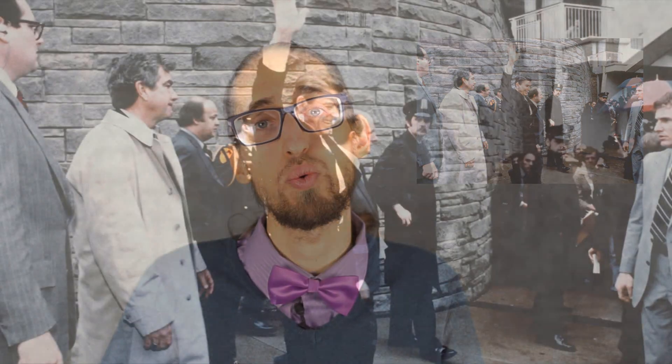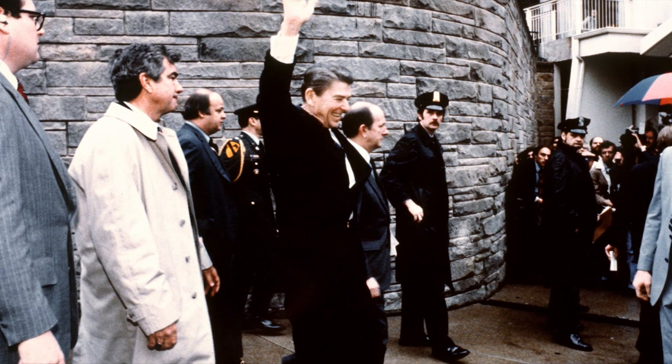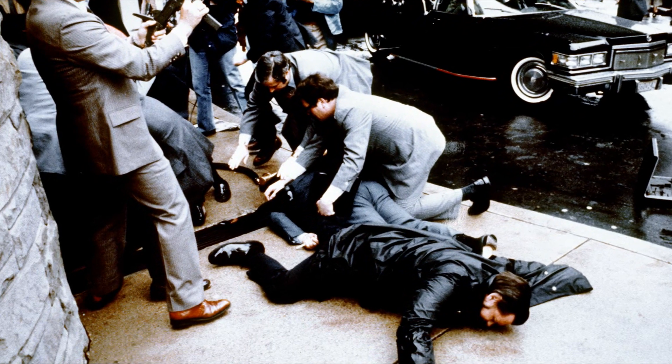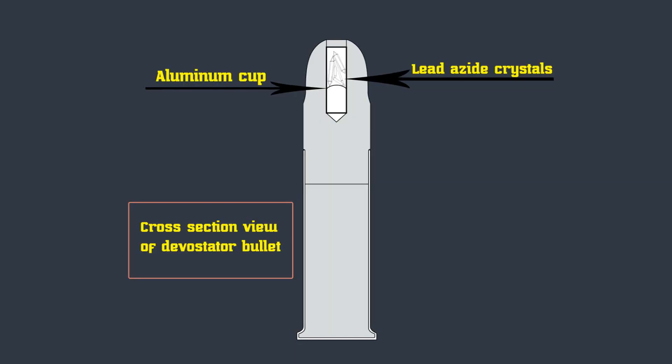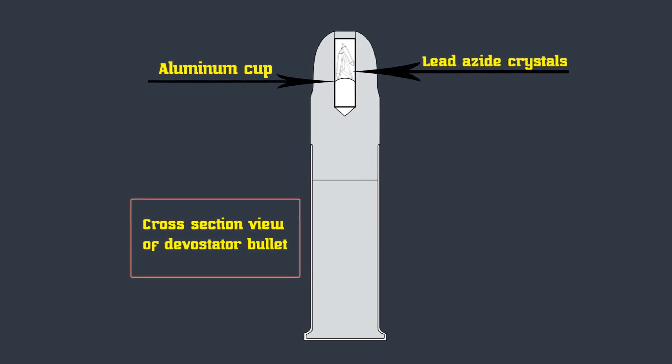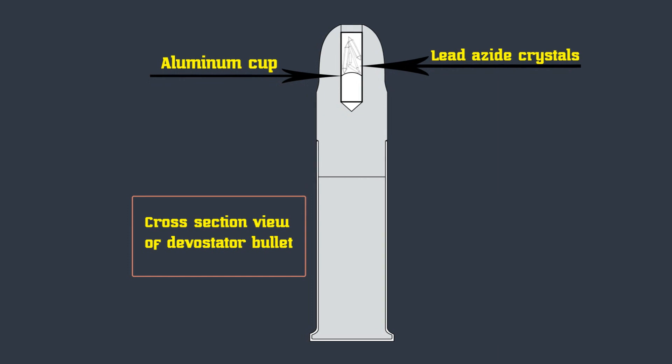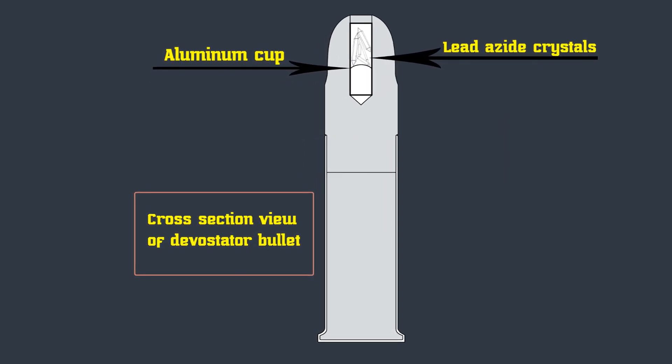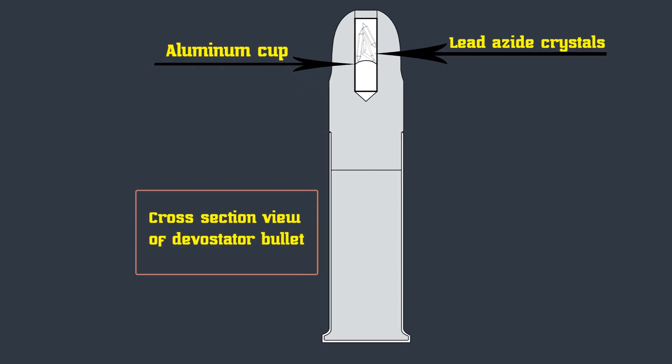In March 13, 1981, there was an assassination attempt on U.S. President Ronald Reagan by devastating rounds fired from a revolver. The cause of devastating rounds was a hollow-point bullet with inside a small aluminum cup filled with a few grains of lead azide. The bullet is designed to explode on impact when the lead azide is crushed.